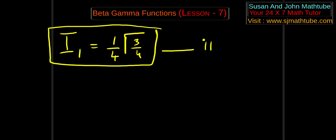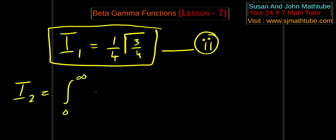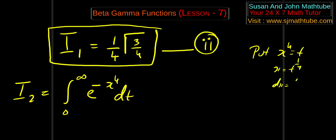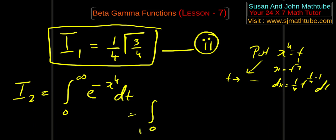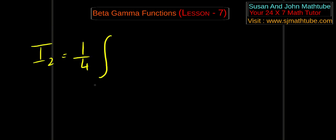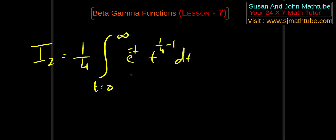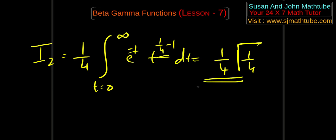Now for i2: integral from 0 to infinity of e^(−x⁴) dx. Again put x⁴ = t, so x = t^(1/4) and dx = (1/4) t^(1/4 − 1) dt. Substituting and taking (1/4) outside gives (1/4) · integral from 0 to infinity of e^(−t) · t^(1/4 − 1) dt, which equals (1/4) · γ(1/4). Call this equation number 3.